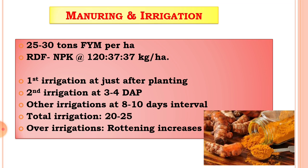The full dose of phosphorus and potassium and half dose of nitrogen is applied at the time of planting. The remaining half dose of nitrogen is given after six weeks of planting, that is after complete germination.